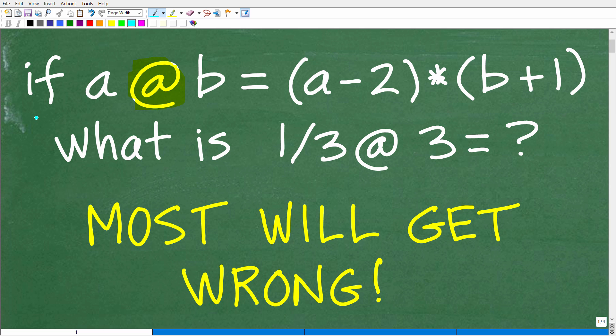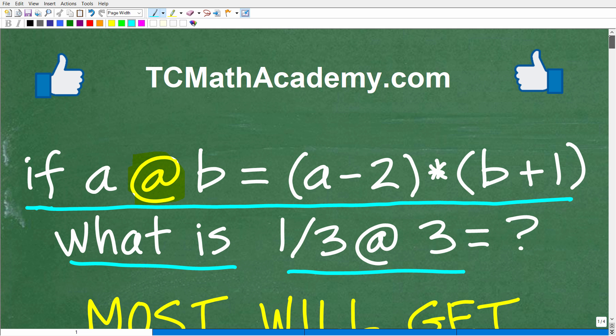So the problem is the following: if a @ b equals (a-2) times (b+1), what is 1/3 @ 3 equal to? Alright, so hopefully you can figure this out. And if you have the answer, go ahead and put that into the comment section. I'll show you the right answer in just one second, and then, of course, I'm going to explain fully what's going on here.